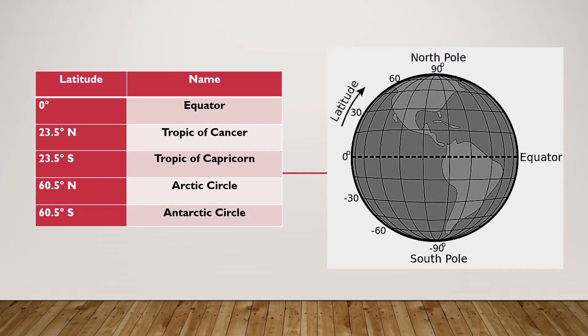The latitudes have five special names. We have 0 degrees — that's the equator. Then we have 23.5 degrees north — that's the Tropic of Cancer. Then we have 23.5 degrees south — that's the Tropic of Capricorn. Then we have 60.5 degrees north — that's the Arctic Circle. And we also have 60.5 degrees south — that's the Antarctic Circle.